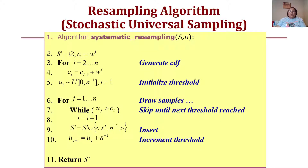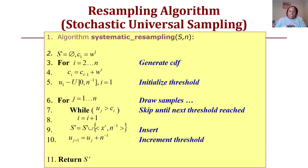Here is what the resampling algorithm looks like for stochastic universal sampling. You iterate through all states for i equals one to N, find c, then initialize a threshold. Based upon that threshold you draw samples and determine whether they meet the threshold or not. If they do not, you skip them until the threshold is reached; if they do, you include them in your new sample set and then increment the threshold. At the end, you return your systematic resample data based upon stochastic universal sampling.